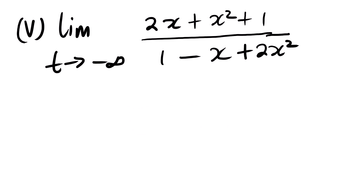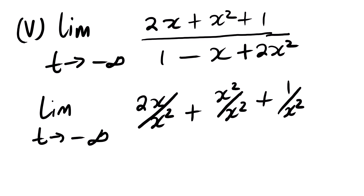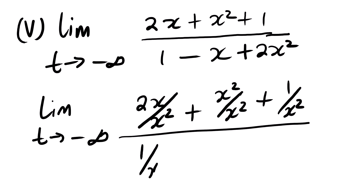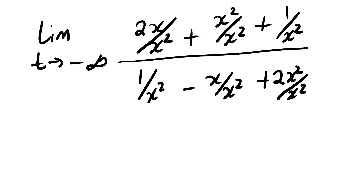This is our last question. We can see that we have limit as t approaches negative infinity. Remember: identify the variable with the highest power. Here the highest power is squared, so we divide every term by x squared: 2x over x squared plus x squared over x squared plus 1 over x squared, all over 1 over x squared minus x over x squared plus 2x squared over x squared. The power of 2 will cancel accordingly.